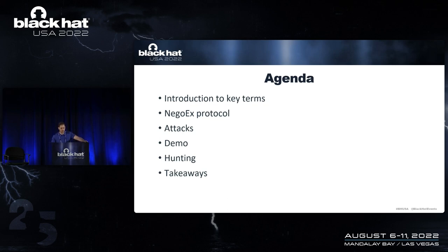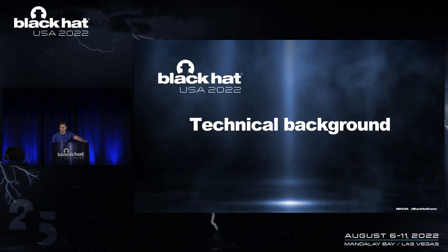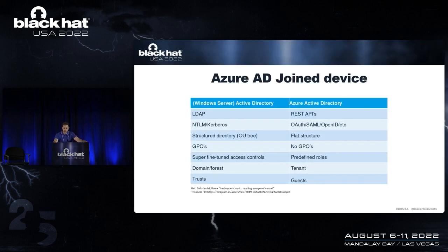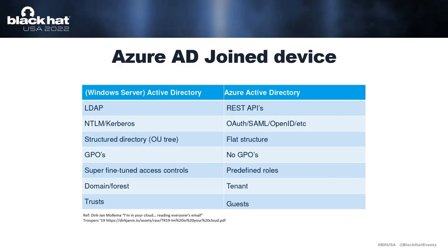Let's start with the technical background. Our first topic is Azure AD joined devices. An Azure AD joined device is a device connected directly to Azure AD and managed by Azure AD. In the case of an Azure AD joined device, only Azure AD accounts can log into the device — there are no local users by default. You can obviously add them, but by default they do not exist.